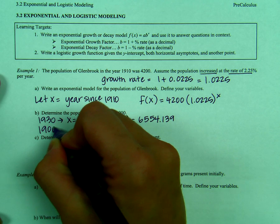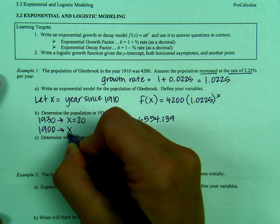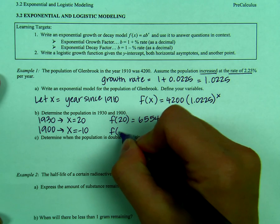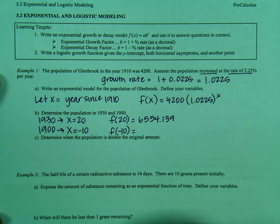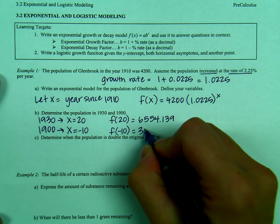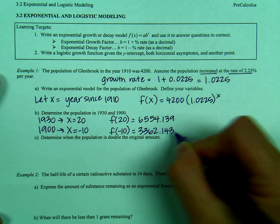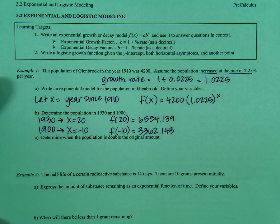In 1900, we're going to have to use the value x equals negative 10. So for f of negative 10, you simply plug in negative 10 into the function and we will get 3,362.143.